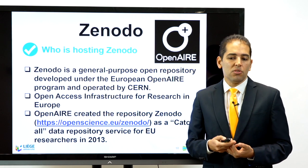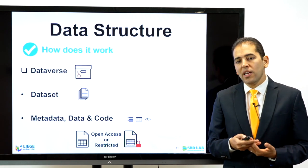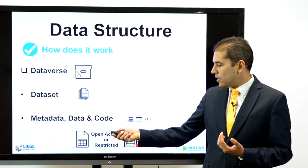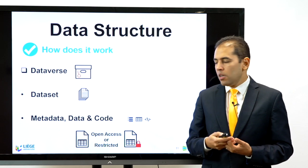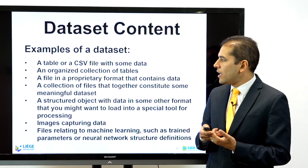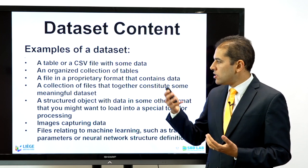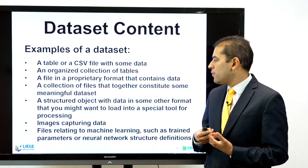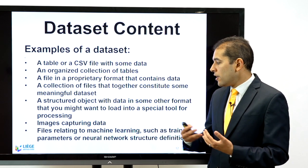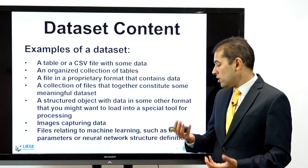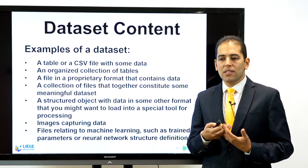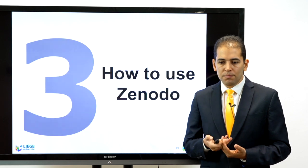There are three types of data in Zenodo: metadata with all types of spreadsheets, datasets, and images; datasets themselves; and data versus. Examples include spreadsheets, CSVs, organized collections of tables, files in proprietary formats, collections of files, structured objects, images, files related to machine learning or training parameters, or neural network structure definitions. The repository is open to most file types, as long as they are in a universal, interoperable format.